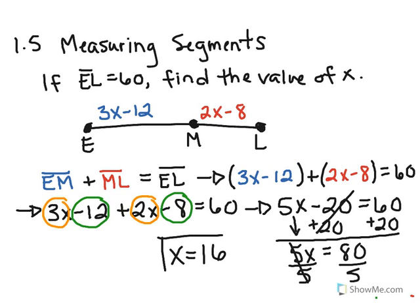So there we have the segment addition postulate. That sums it up. It just tells you that two segments and they share this center endpoint that you can do this process to determine a missing variable.